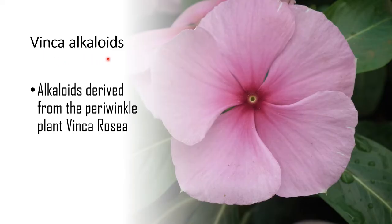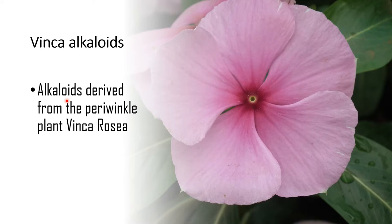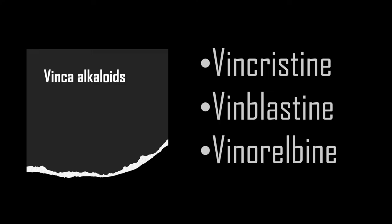Vinca alkaloids are alkaloids derived from the periwinkle plant, vinca rosea. Alkaloids are a class of naturally occurring organic nitrogen-containing compounds found in plants, and many have been used as medicinal agents. The medicinal substances derived from vinca alkaloids are vincristine, vinblastine, and vinorelbine.